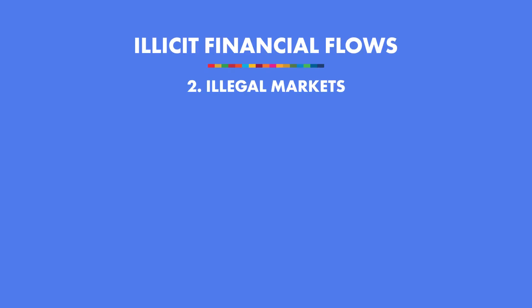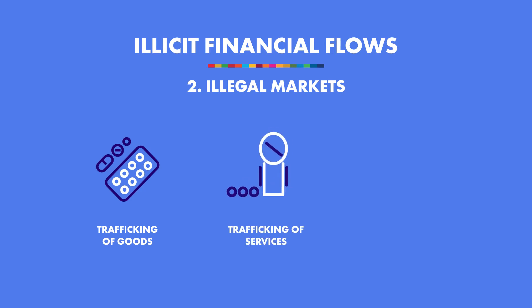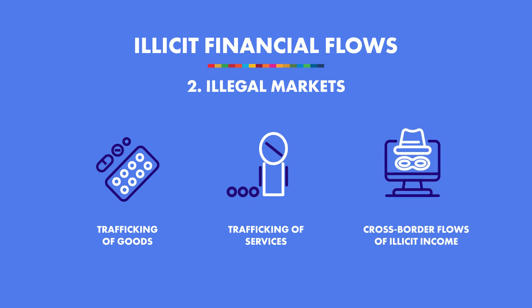IFFs from illegal markets refers to trafficking in goods such as drugs and firearms, or services such as smuggling of migrants, as well as cross-border flows from managing the illicit income from such activities. As an example, in one large Latin American country, the amount of illicit financial flows related to drug trafficking is the same size as all the exports of agricultural products in that same country.